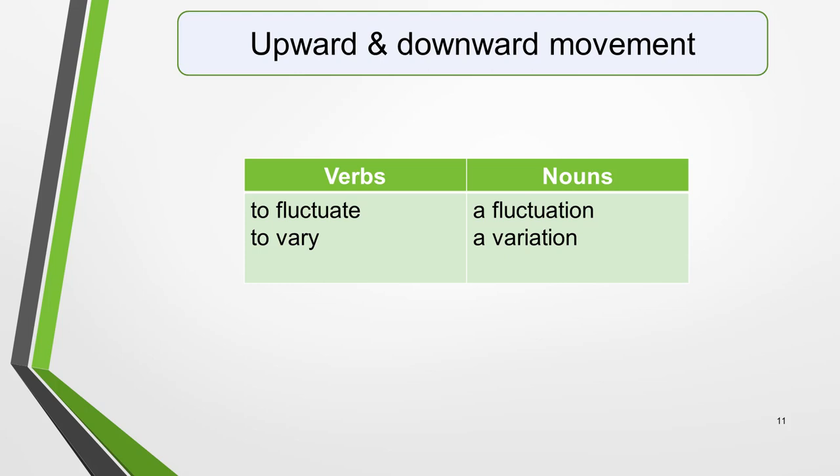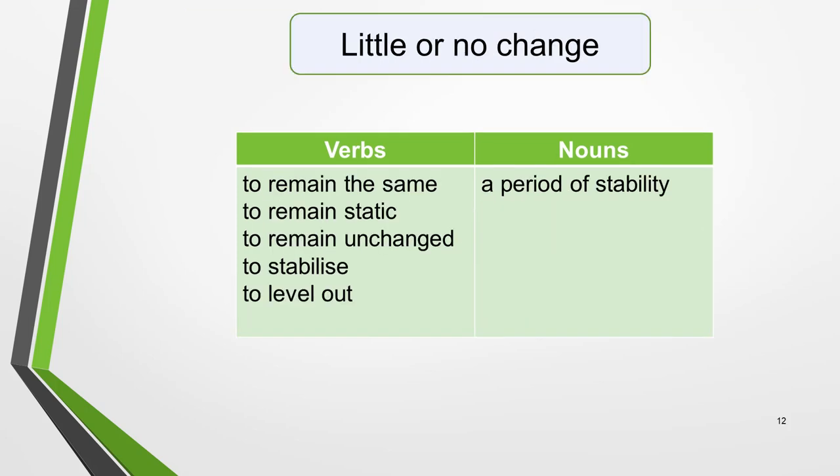The noun forms for fluctuation are: a fluctuation, a variation. Finally, you'll need a couple of phrases to describe situations that show little or no change. For verbs: to remain the same, to remain static, to remain unchanged, to stabilize, to level out. Remember to use the appropriate tenses for all these verbs. A useful noun is 'a period of stability'.